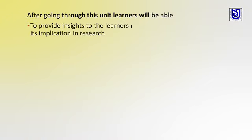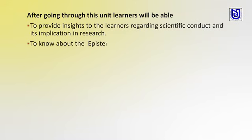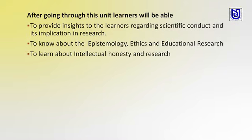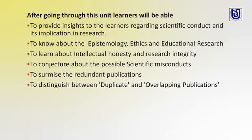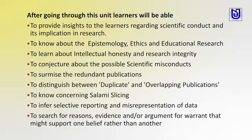After going through these slides or this unit, learners will be able to: provide insight regarding scientific conduct and its implications in research; know about epistemology, ethics, and educational research; learn about intellectual honesty and research integrity; conjecture about possible scientific misconducts; summarize relevant publications; distinguish between duplicate and overlapping publications; and know concerning salami slicing.